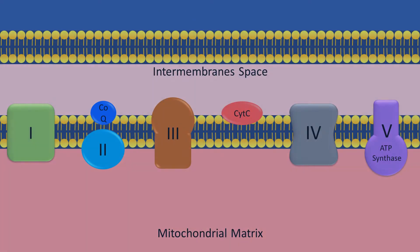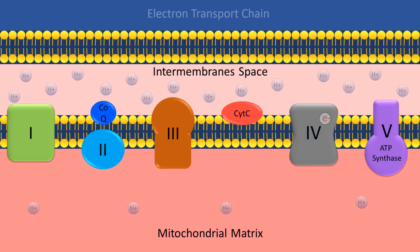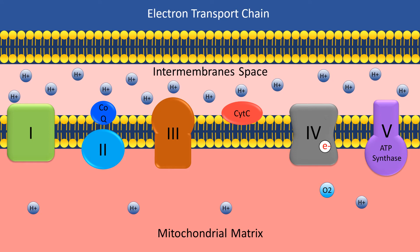At this point, complex 4 passes the electrons to oxygen, which is the final electron acceptor. After receiving the electrons, oxygen splits into two oxygen ions, and then protons are added, forming two water molecules.